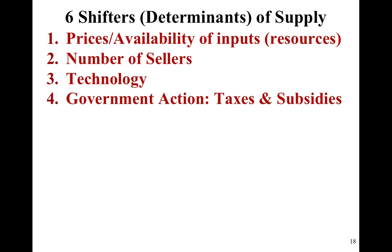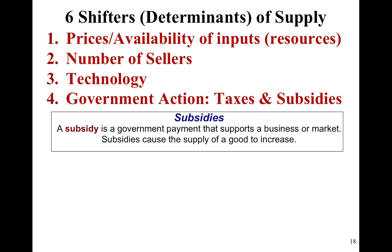Government action in terms of taxes and subsidies can shift supply in or out. Although when we graphically represent taxes, that's the only time that we make a vertical shift to the supply curve, though it's not really a shift — that's why we move it vertically.